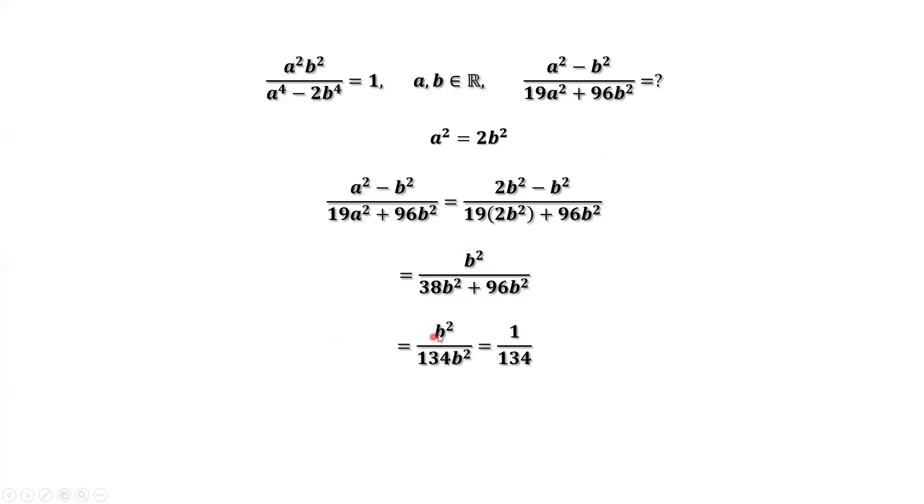We have b squared over 134b squared. b squared from both numerator and the denominator can be cancelled. The final answer is 1 over 134.